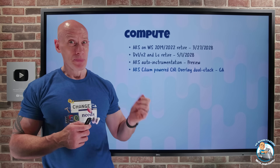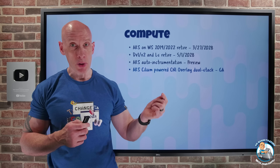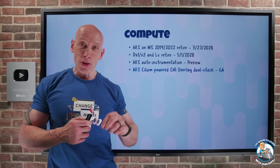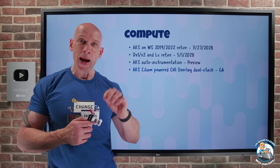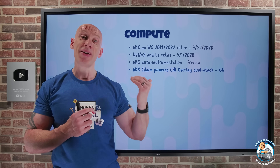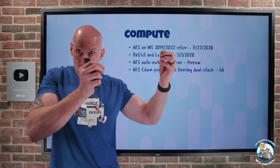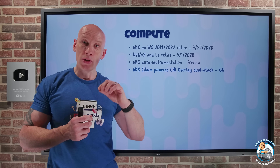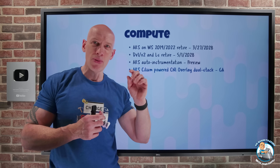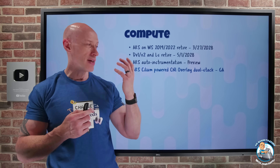Also with Cilium, there's now support for WireGuard encryption for node-to-node communications. And with Cilium and the advanced container network services, it now has layer 7 network policies. So for app-level traffic, you can have security rules based on application layer attributes, making it easier to implement zero trust for those app services.